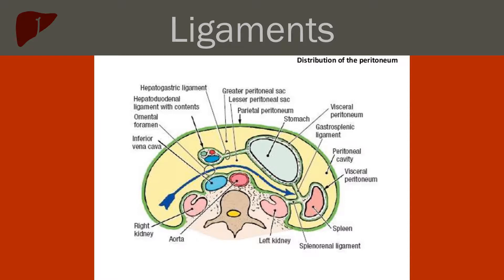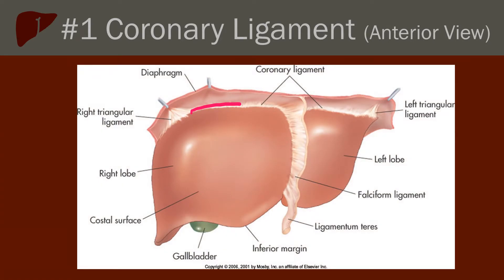There are eight liver ligaments to identify. The first ligament is the coronary ligament. The coronary ligament connects the liver to the diaphragm and has two layers: the anterior and posterior layer. The anterior layer is made of parietal peritoneum underneath the diaphragm, and the posterior layer is peritoneum that connects the lower margin of the bare area to the right adrenal gland and kidney. The anterior layer is continuous with the falciform ligament, and the posterior layers connect into the right and left triangular ligaments. This shows the anterior view of the coronary ligament running underneath the diaphragm and how it connects to the falciform ligament.